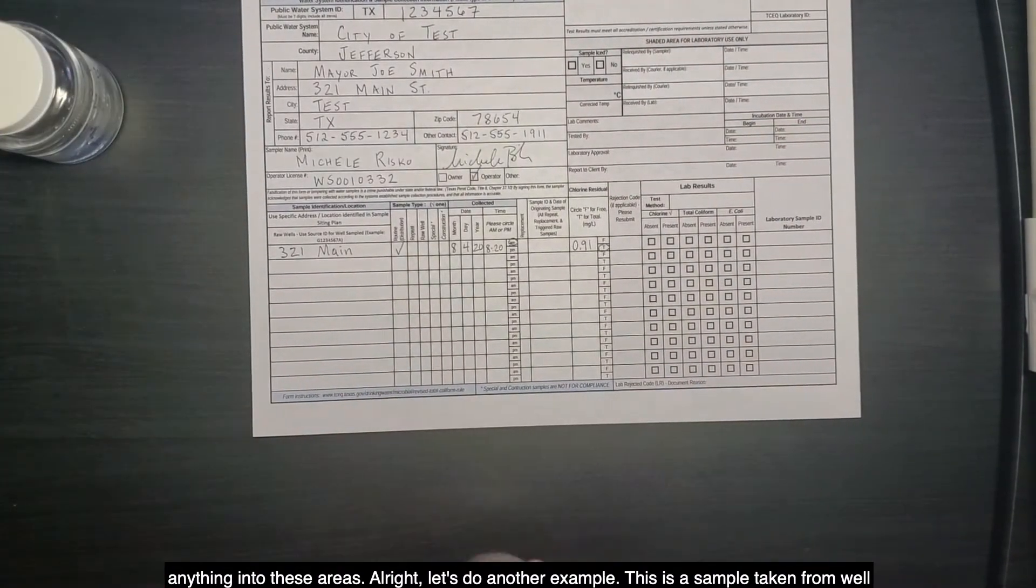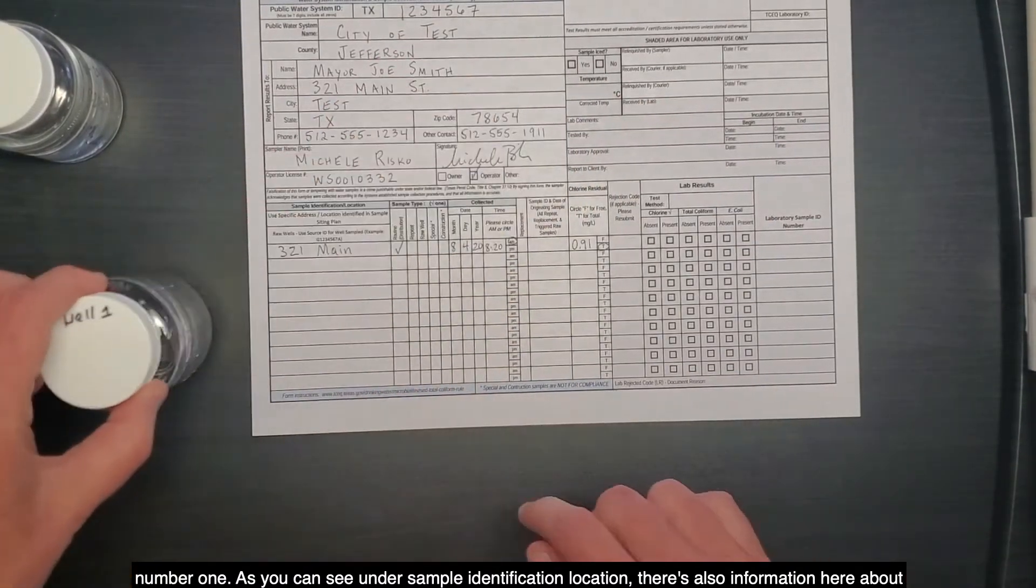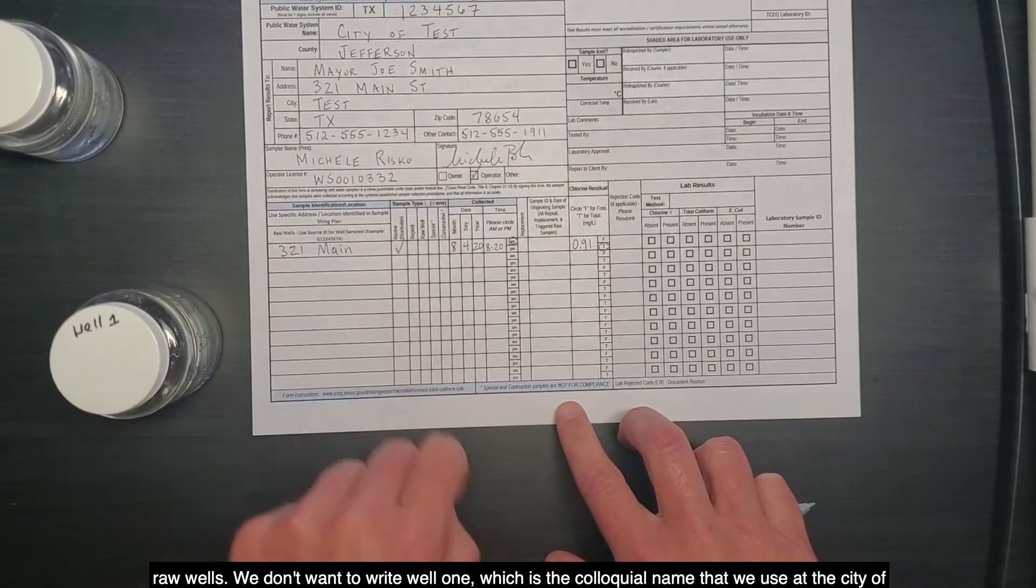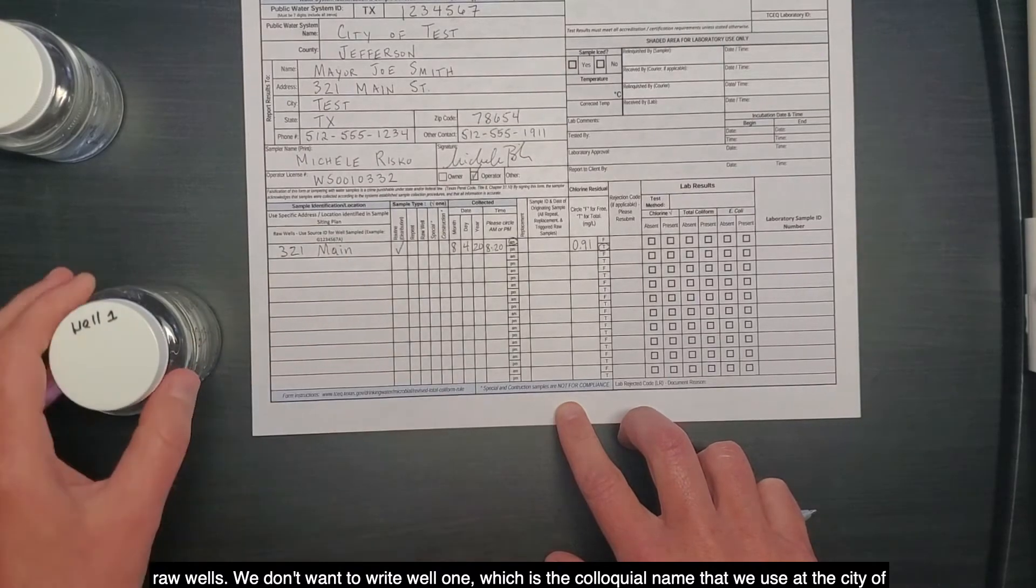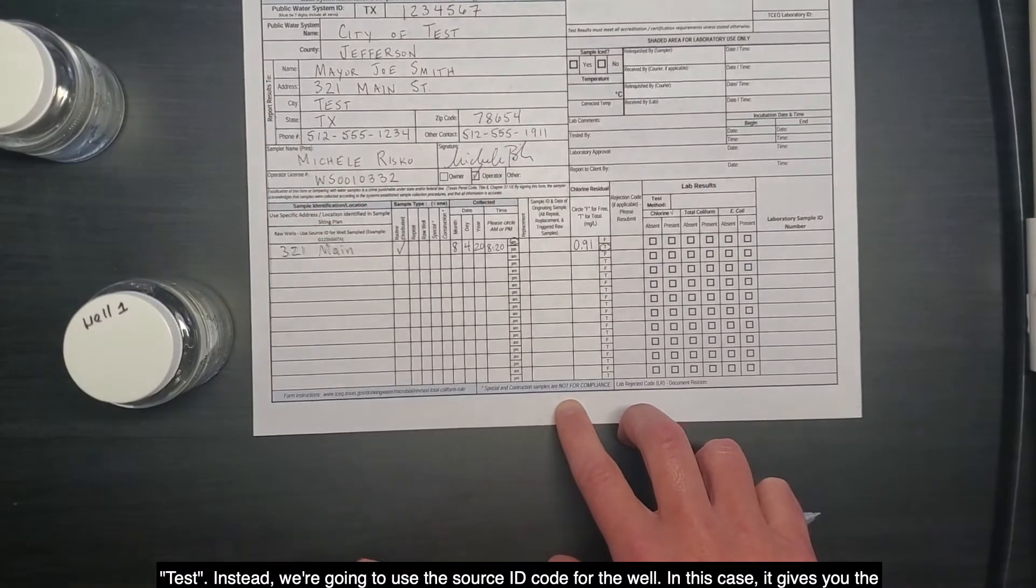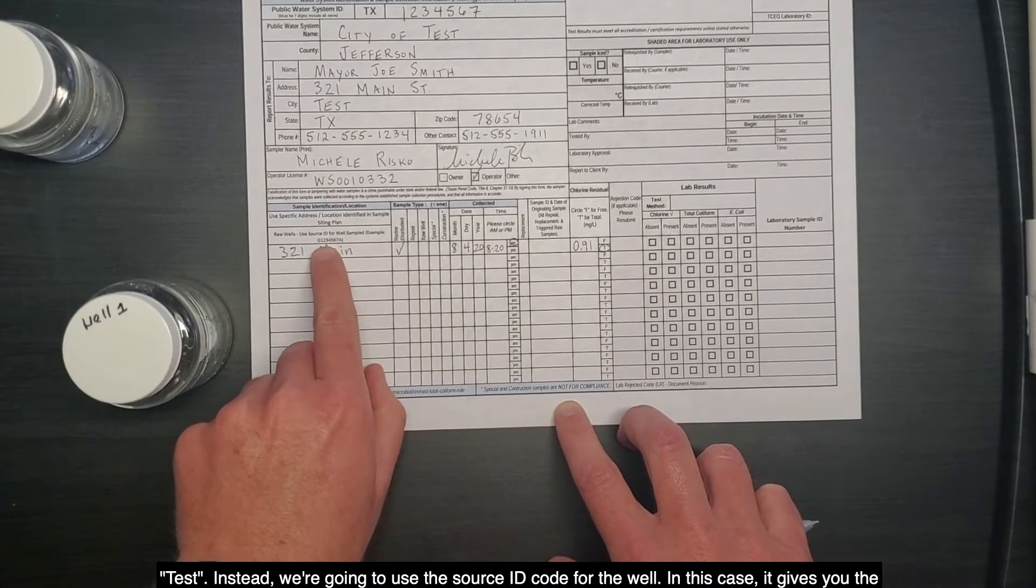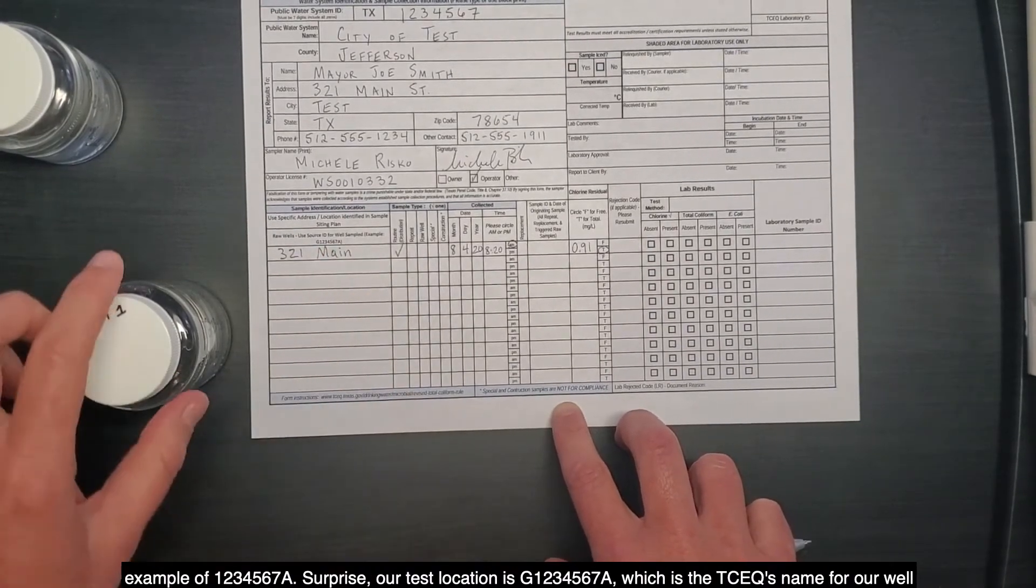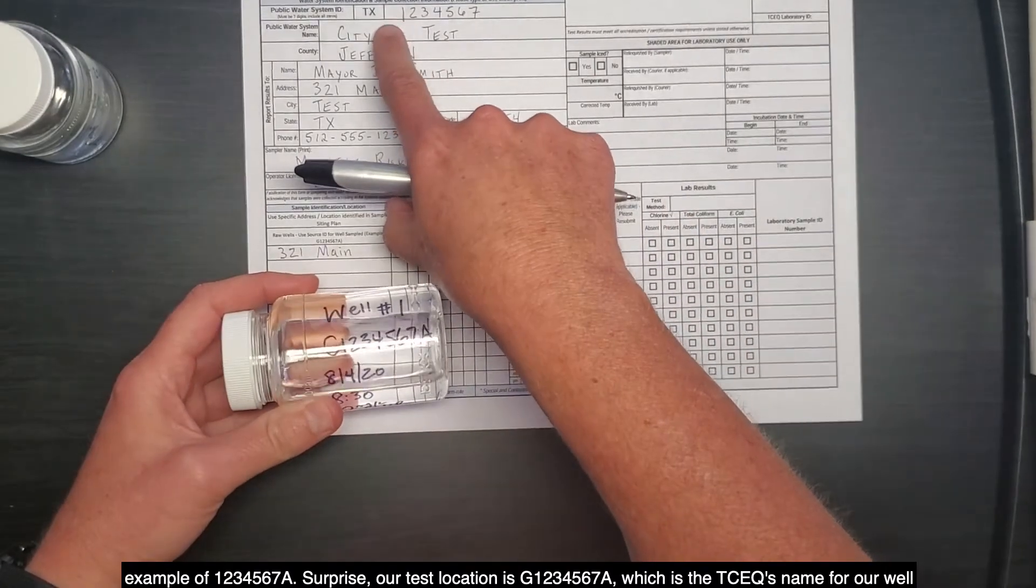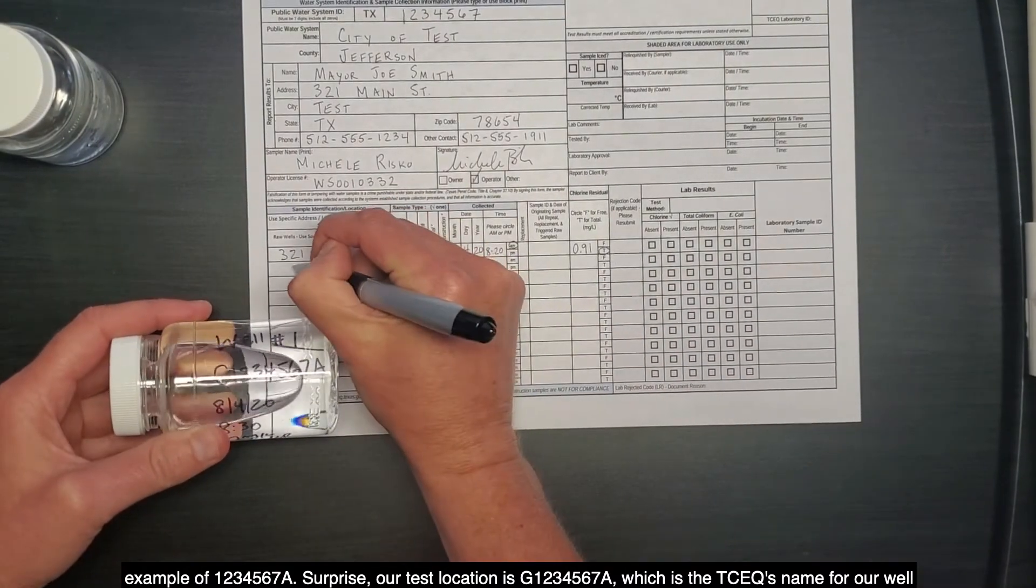All right, let's do another example. This is a sample taken from well number one. As you can see under sample identification location, there's also information here about raw wells. We don't want to write well one, which is the colloquial name that we use at the city of test. Instead, we're going to use the source ID code for the well. In this case, it gives you the example of 1234567A. Surprise! Our test location is G1234567A, which is the TCEQ's name for our well number one.